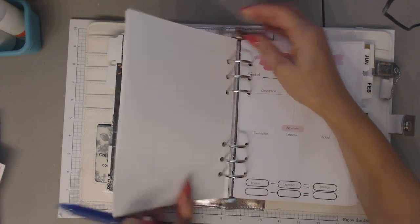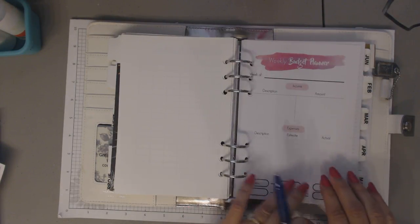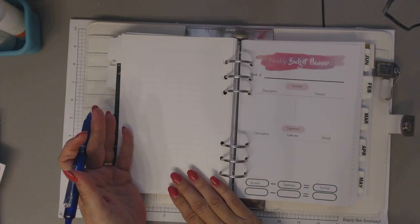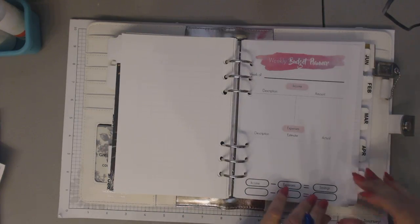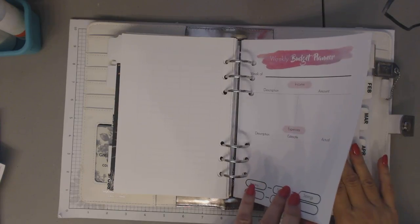So each week is going to start with the weekly budget sheet. And this information will help me determine the monthly sheet, the monthly budget. So I've got this whole thing here at the beginning of each week.